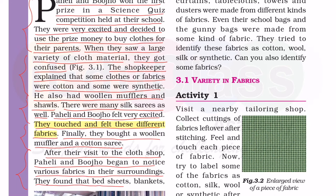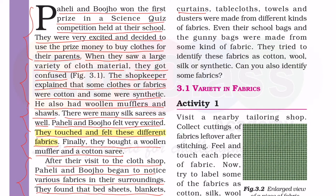They found that bedsheets, blankets, curtains, table clothes, towels and dusters were all made from different kinds of fabrics.